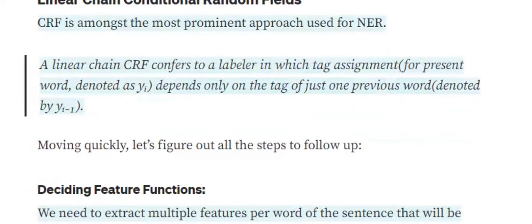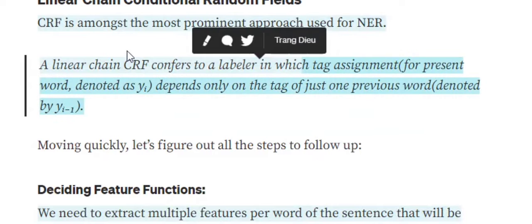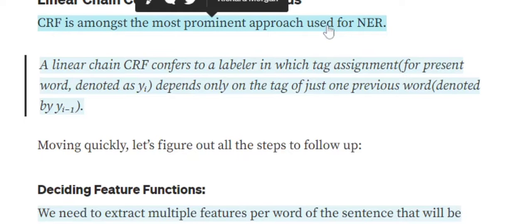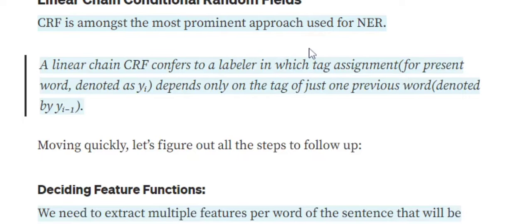We will be discussing how a CRF works for named entity recognition. As given in the definition, a linear chain CRF is a labeler in which tag assignment for the present word depends only on the tag of the previous word. For example, in the sentence 'CRF is among the most prominent approach used for NER', to get a tag for 'used', the CRF considers the tag of its previous word alongside some feature functions.